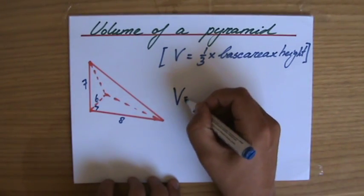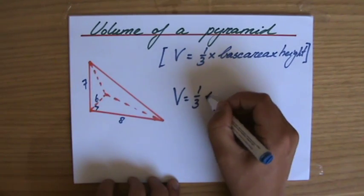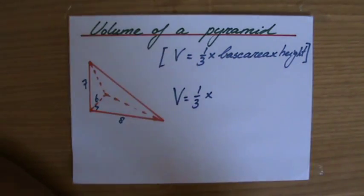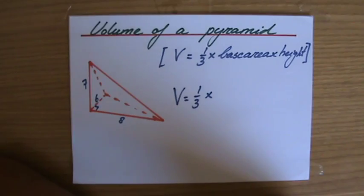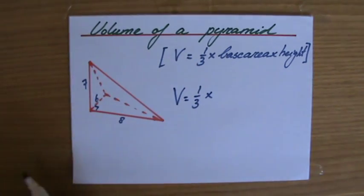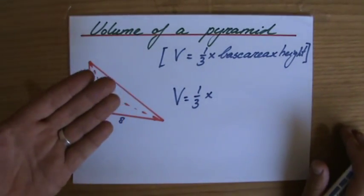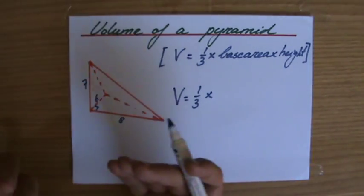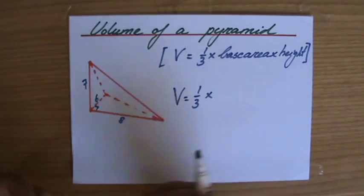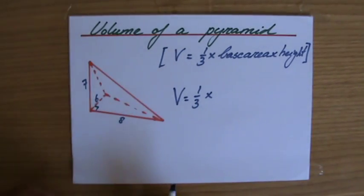So the volume is a third times... Now, the base area, what is the base? It's a triangle, so I've got to find the area of that triangle. And if this would have been a square-based pyramid, I'd find the area of its base then, which is a square. When it's a hexagonal-based pyramid, I have to find the area of that hexagon first, but in this case, it is a triangle.